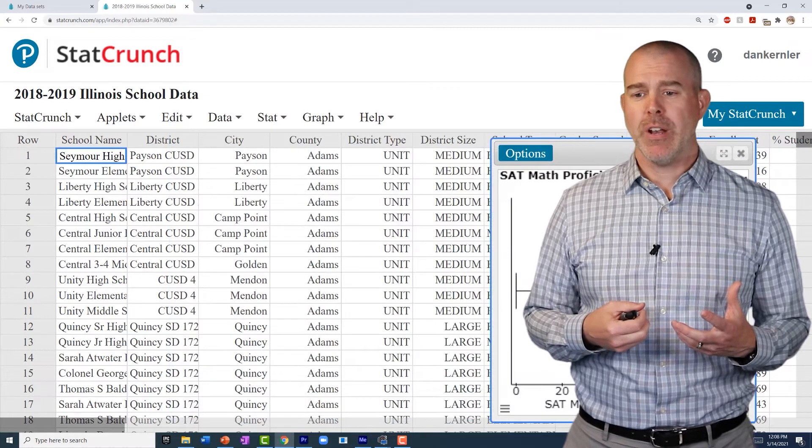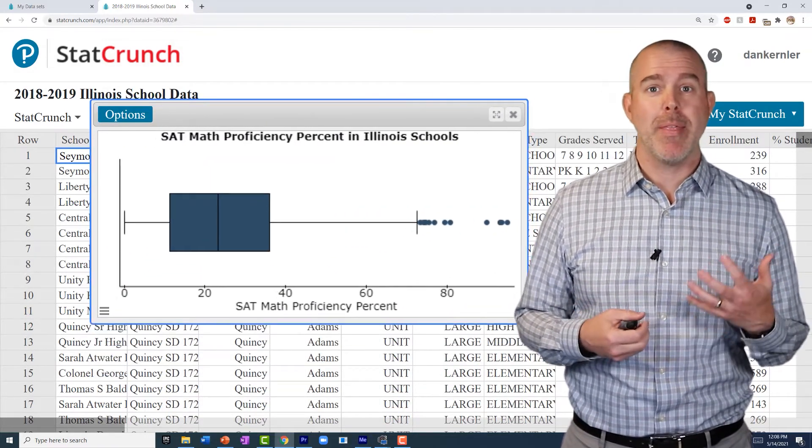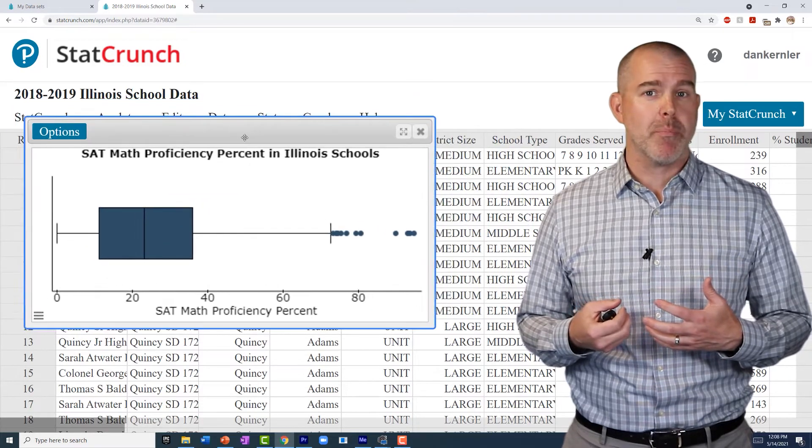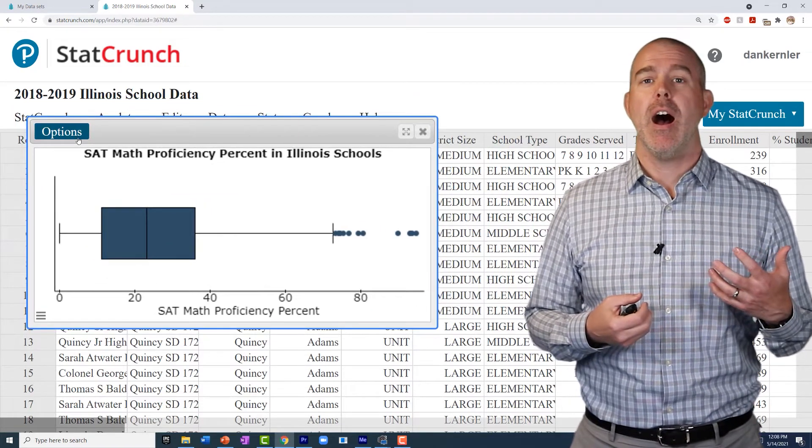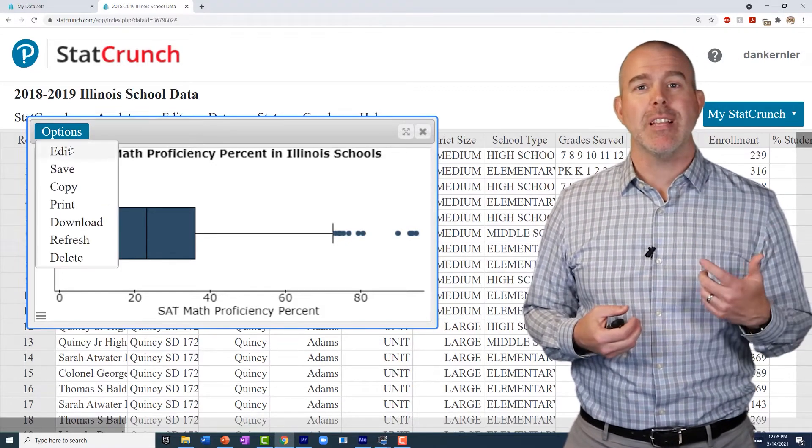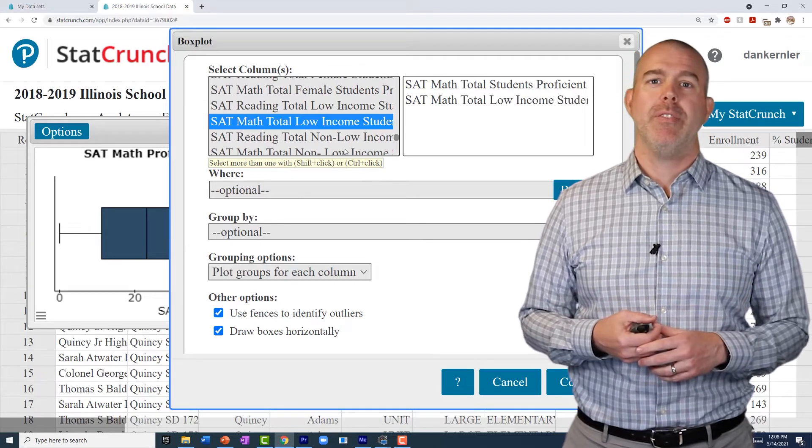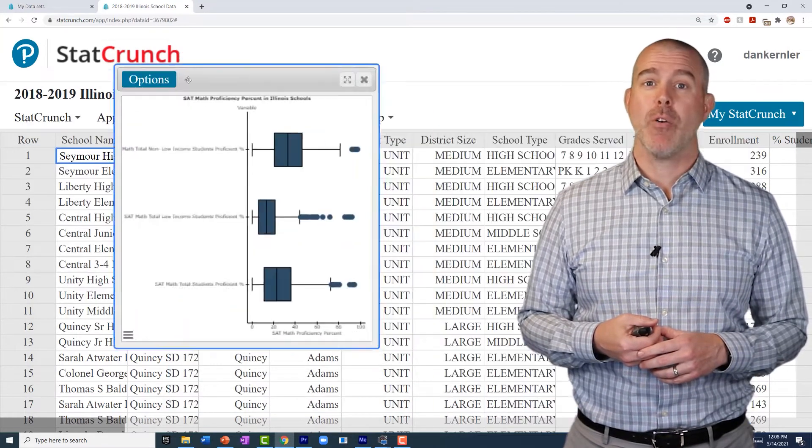Now, one thing we might want to do, as we've done with the other analysis previously, is split this up by the percent of low-income students who are proficient and the percent of non-low-income students who are proficient. It's easy enough. We just go Options, Edit, and then select those two along with it. And we can graph all three of these together on the same graph.